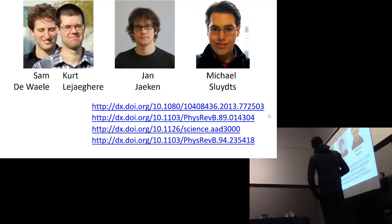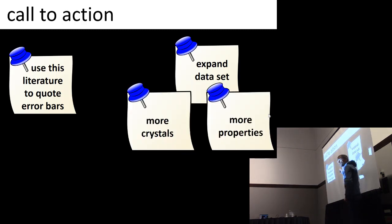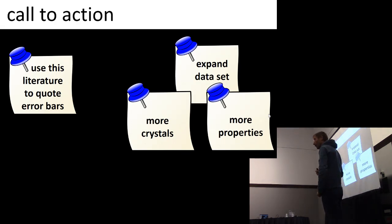These are the people who did this analysis, and I have for all of the topics I want to discuss some calls to action for you. For the validation of PBE predictions, the call to action: you can use the information in these papers, the systematic deviation and residual scatter, to put right away an error bar on your PBE predictions for these properties. That doesn't require any extra calculation. If you are not happy with these numbers, if you want to make them more specific for your case, you can add more crystals in this analysis. If you want to apply this for a property that wasn't studied yet, you can add more properties. So lots of work to do there.